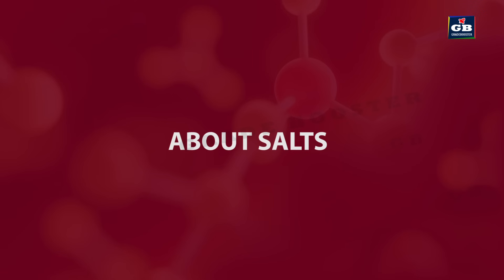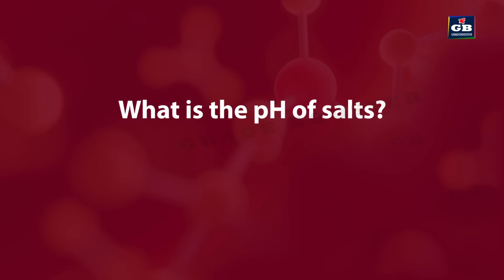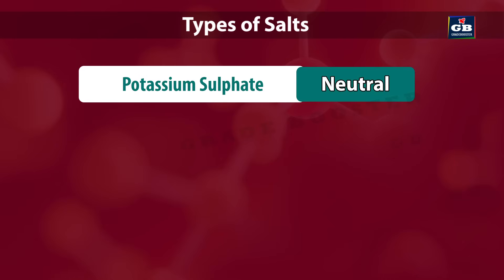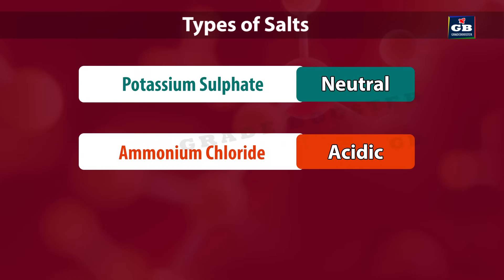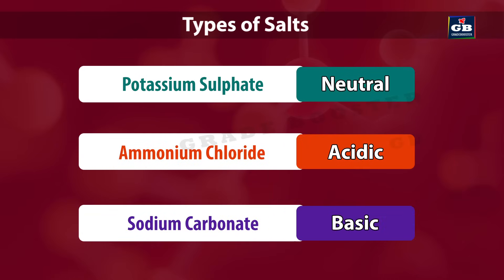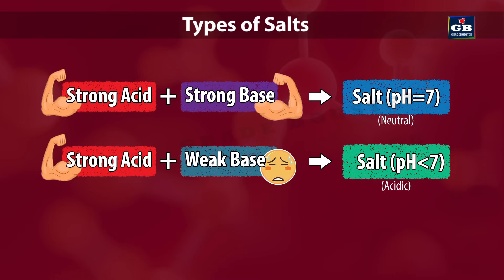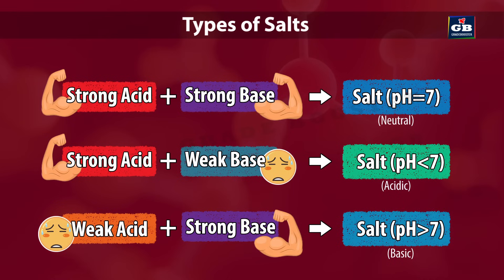Now let us know about salts. What is the pH of salts? Are salts neutral, acidic or basic? Salts of strong acid and strong base are neutral with pH value of 7. Salts of strong acid and weak base are acidic with pH value less than 7. Salts of weak acid and strong base are basic in nature with pH value more than 7.